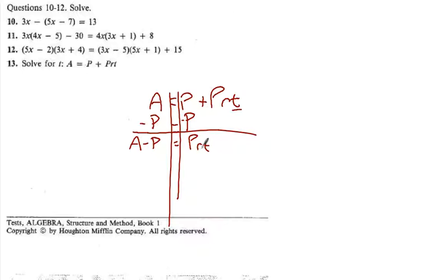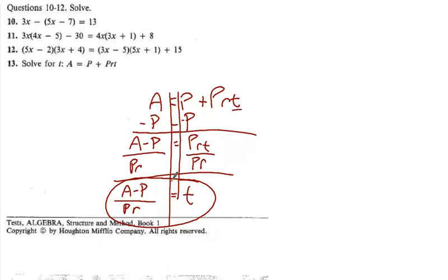What's the opposite of multiplying T by P and R? Dividing by P and R. And so I get A minus P divided by P R is equal to T. And there we go. We have gotten the T all by itself.